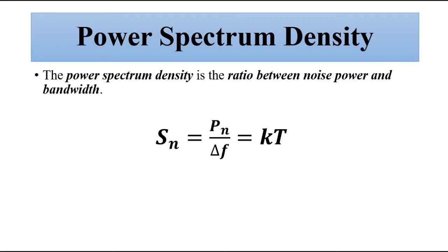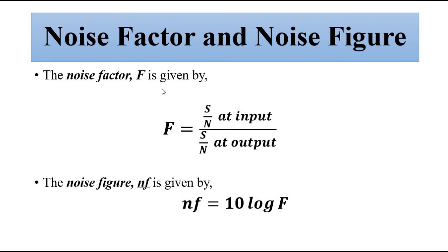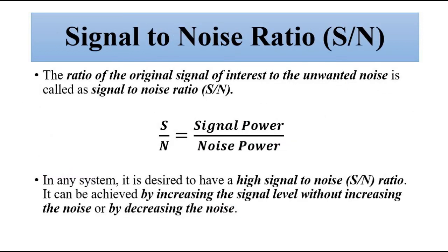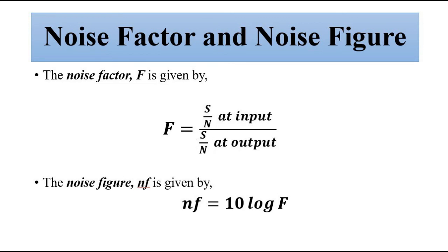Another important parameter is noise factor and noise figure. Noise factor is expressed as the ratio between the signal-to-noise ratio at the input side to the signal-to-noise ratio at the output side. Signal-to-noise ratio is calculated at the input side and then at the output side, and the ratio of these two gives the noise factor F. Noise figure is given by 10 log F, where the noise factor F comes into play with a logarithmic scaling factor.